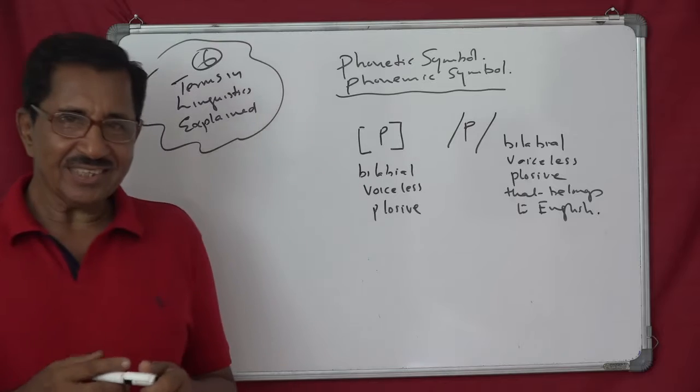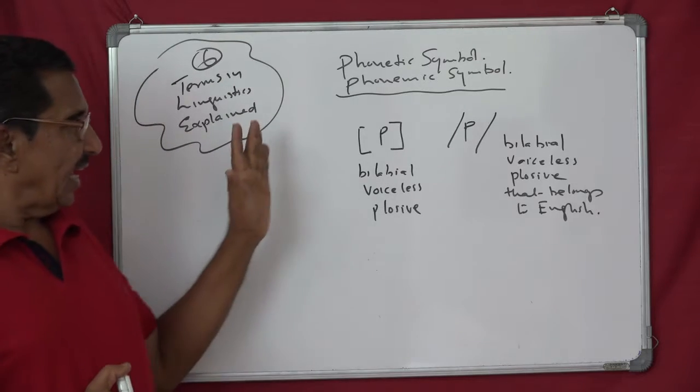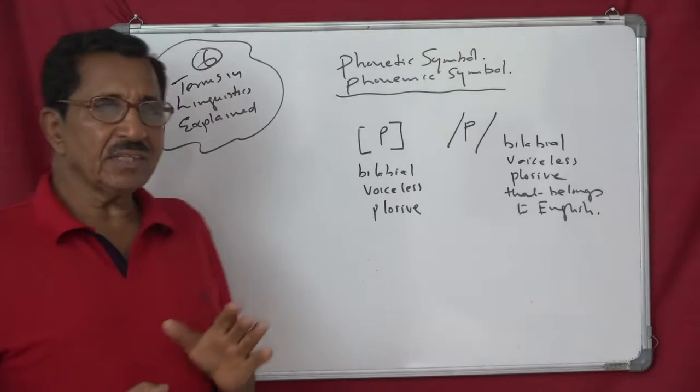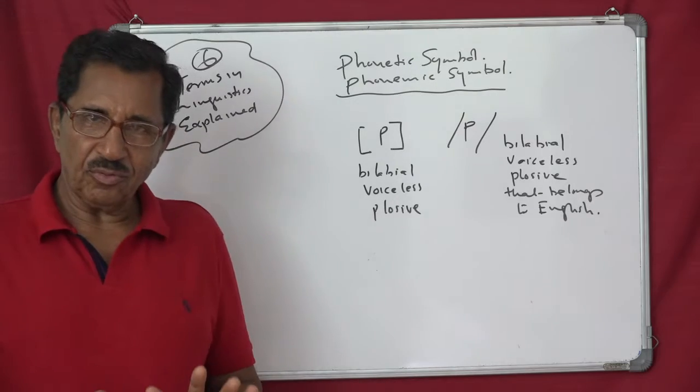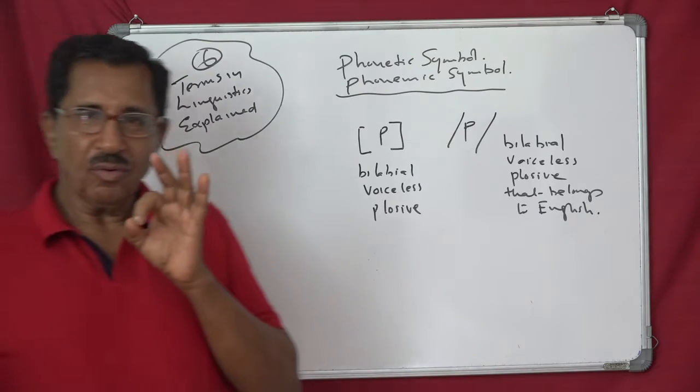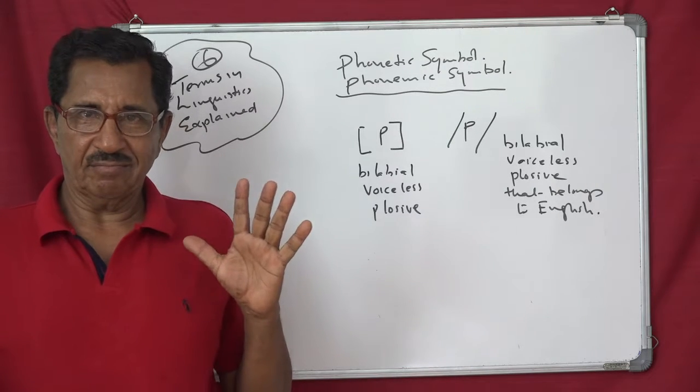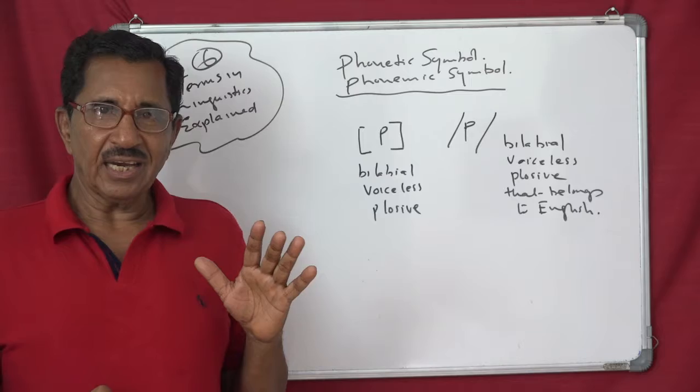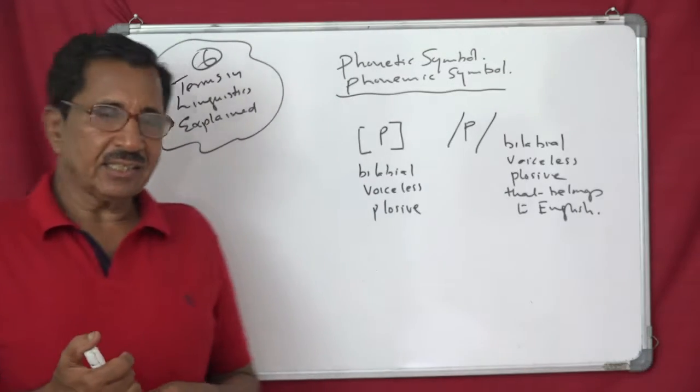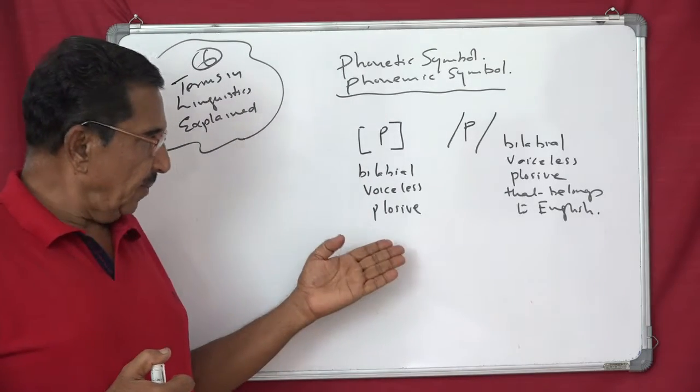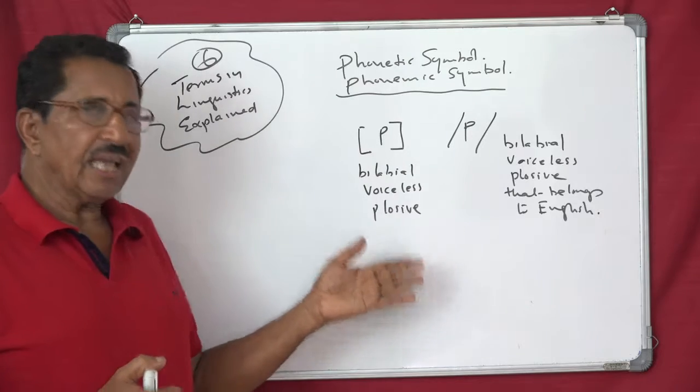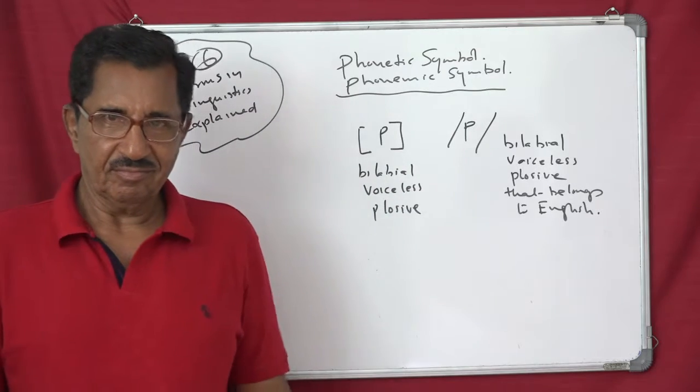In other words, the phonetic symbol just will tell you what is the characteristic of that symbol. That is, you can say, you can say its quality. See, it is bilabial, it is voiceless, and it is a plosive. Understand?